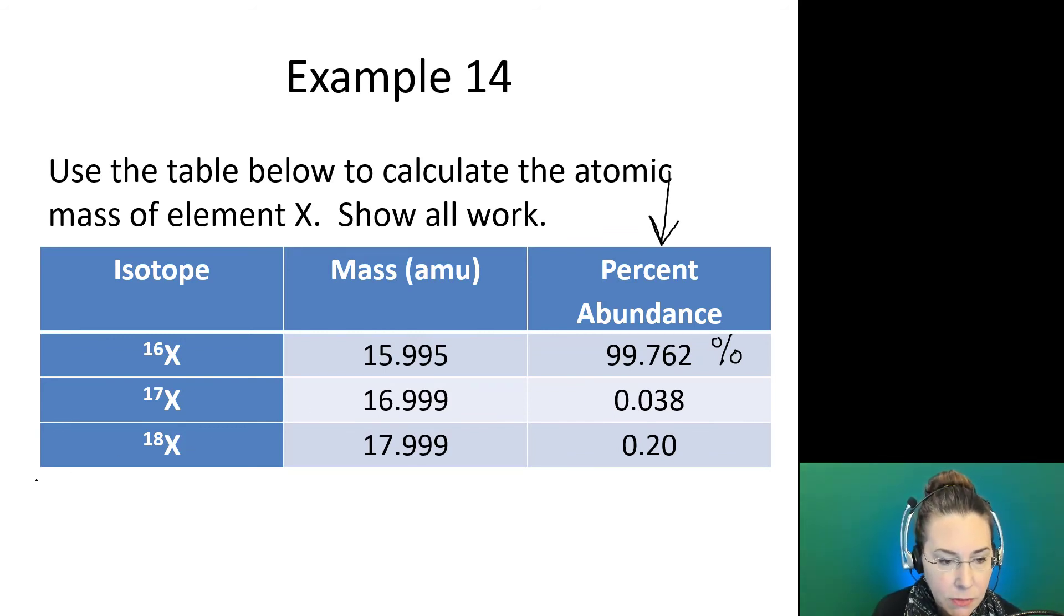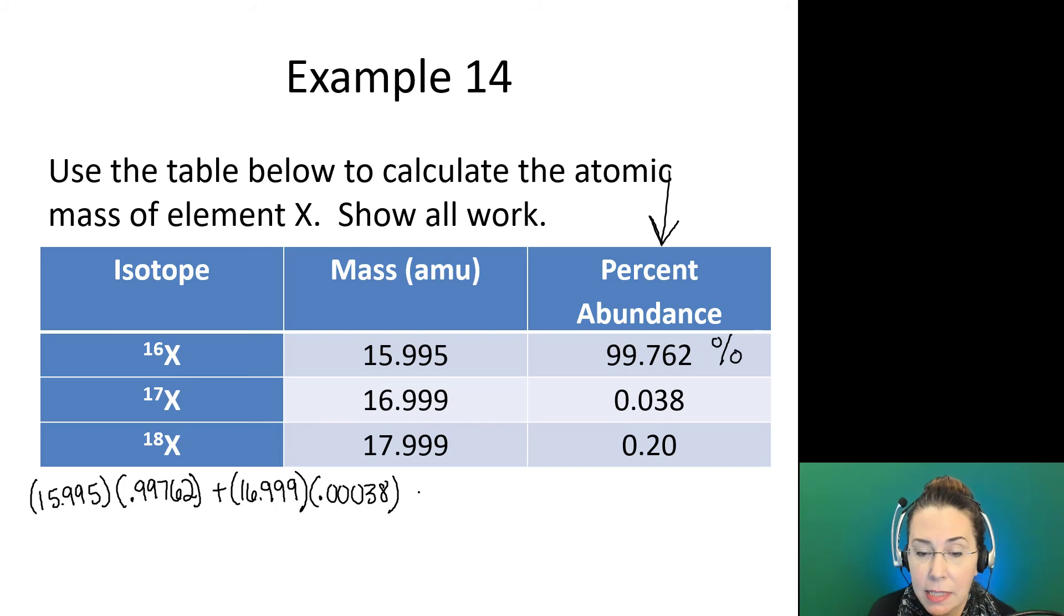So in this case we would have 15.995 times 0.99762. Our second operation would be 16.999 times 0.00038. Yeah that one always throws people. Remember we're moving our decimal two places to the left. It doesn't matter that the value we've been given as the percentage is already a decimal. We have to do this every time. Our last set is 17.999 and we will be multiplying that value times 0.0020.